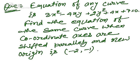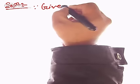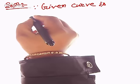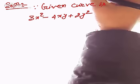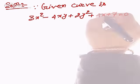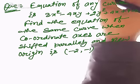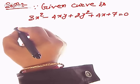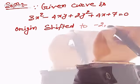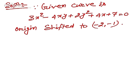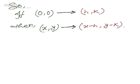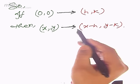The given curve is 3x² - 4xy + 2y² + 4x + 7 = 0. The new origin is (-2, -1), so the origin is shifted to (-2, -1). In this situation, when (0,0) shifts to (h, k), the point (x, y) shifts to (x - h, y - k).